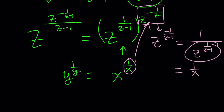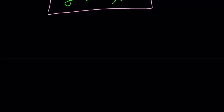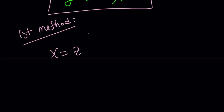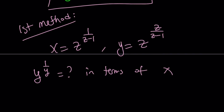Let's go ahead and talk about the first method. We found the answer in terms of x, and now let's take a look at the first method, which should be a cooler method. The problem is x equals z to the power 1 over z minus 1, and y equals z to the power z over z minus 1. The first method, instead of direct substitution, is going to manipulate these expressions.